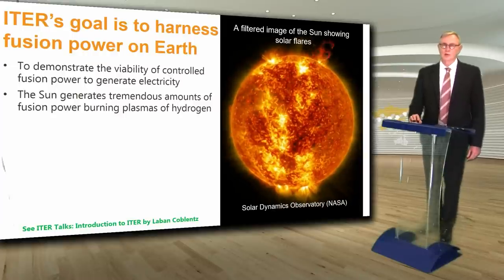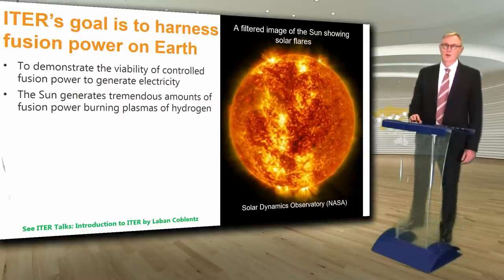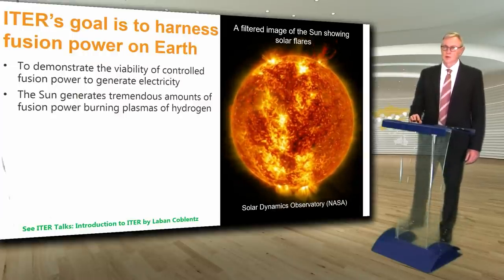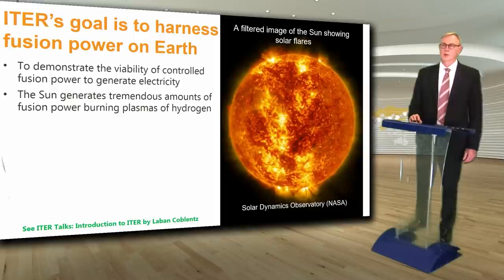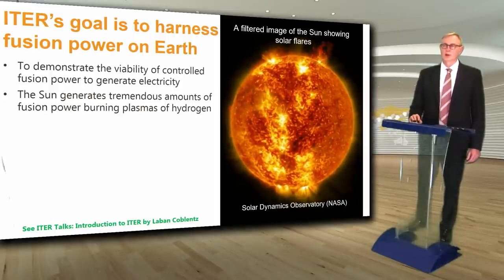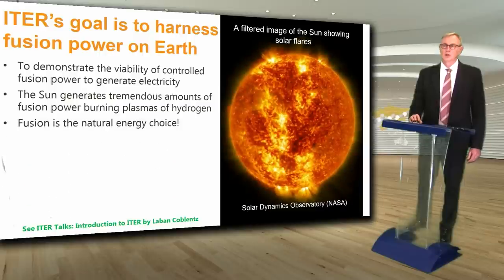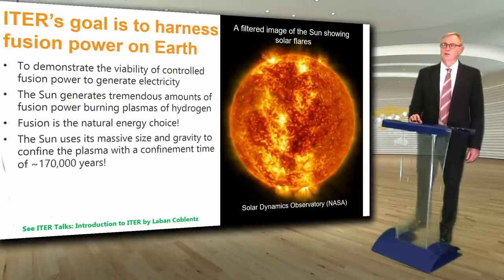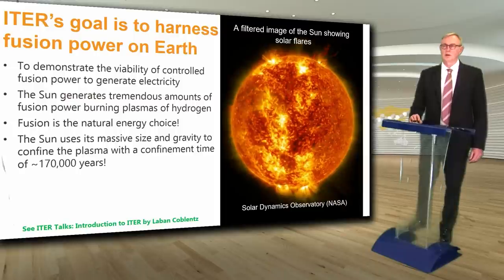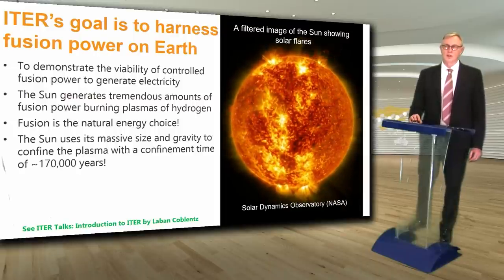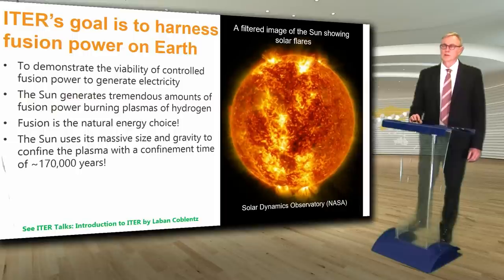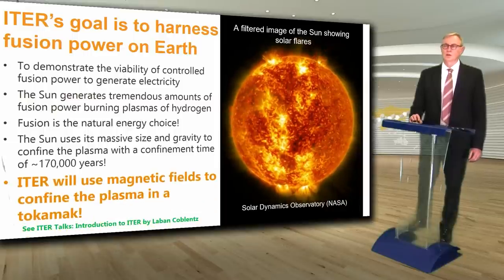ITER's goal is to harness fusion power here on Earth to demonstrate the viability of controlled fusion to generate electricity. The sun generates tremendous amounts of fusion power, burning plasmas of hydrogen. Fusion is the natural energy choice. The sun uses its massive size and gravity to confine the plasma with a confinement time of 170,000 years. ITER will use magnetic fields to confine the plasma in a machine called a tokamak.